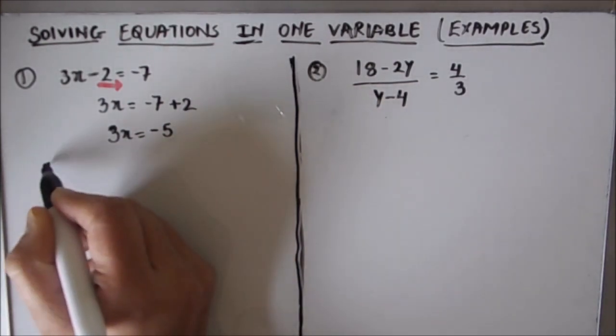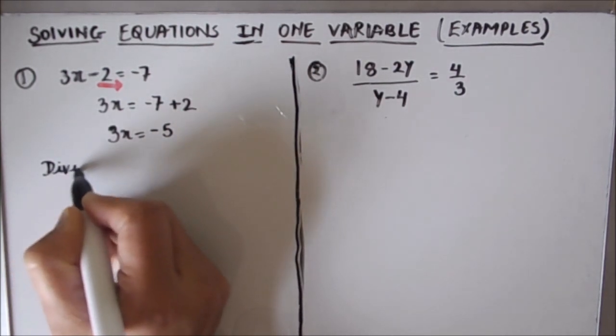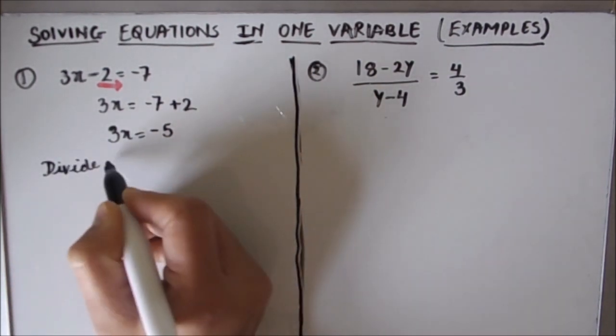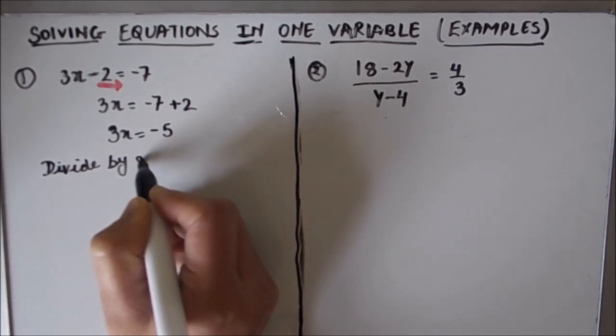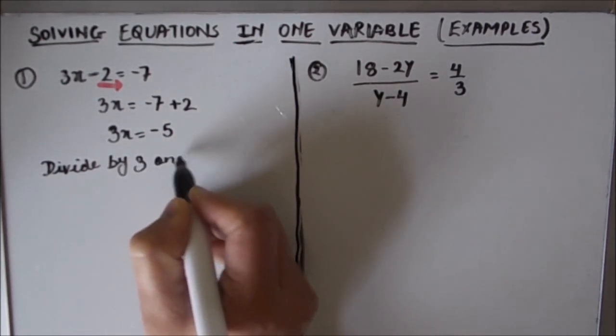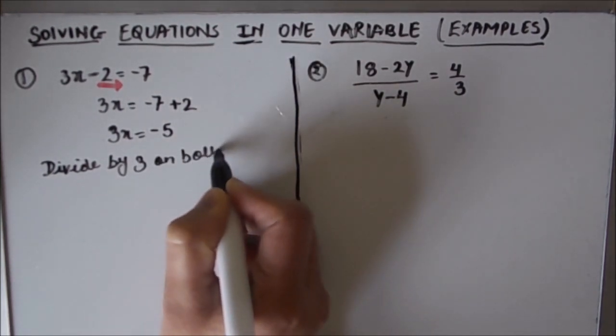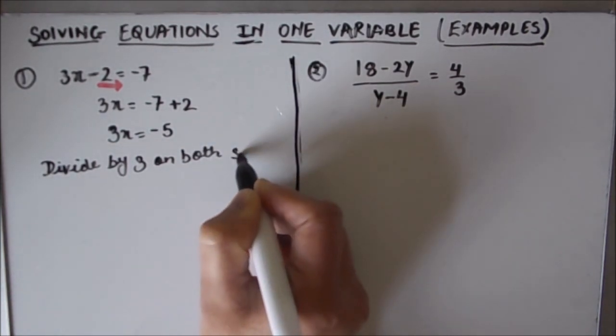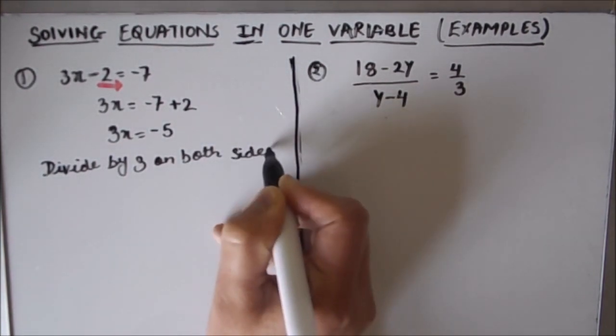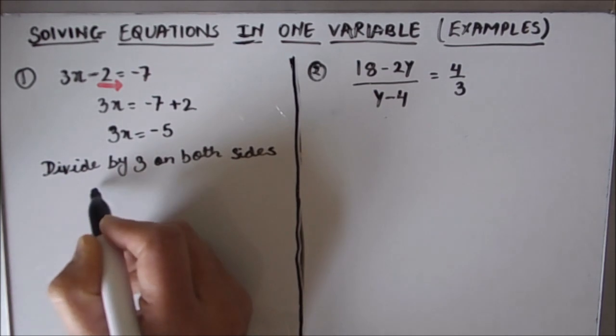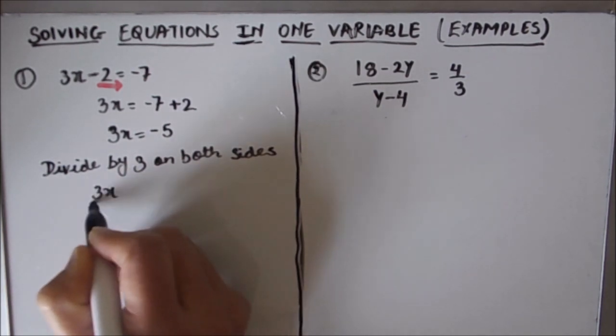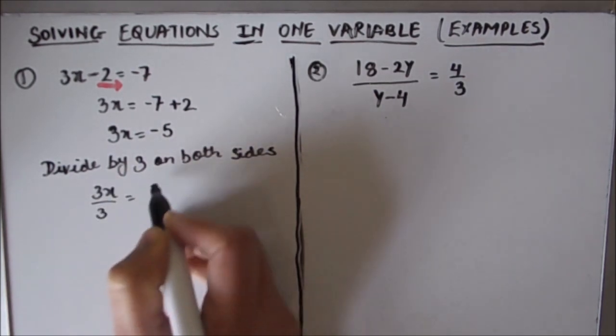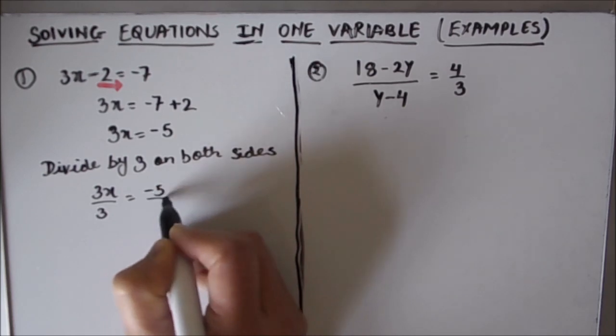Now to find the value of x, we have to divide by 3 on both sides.